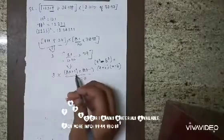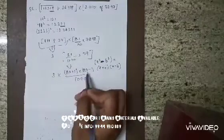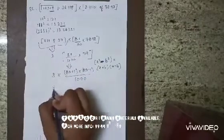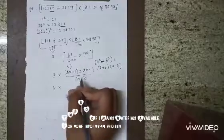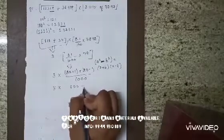So this is nothing but A square minus B square. This can be written as 1600 minus 1.